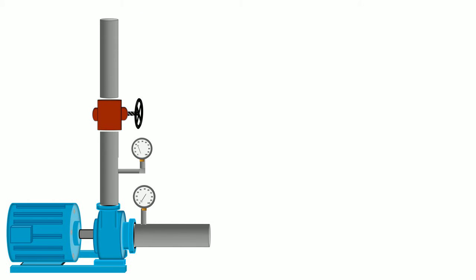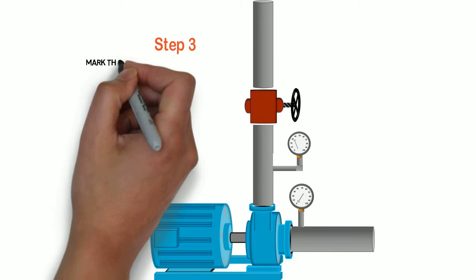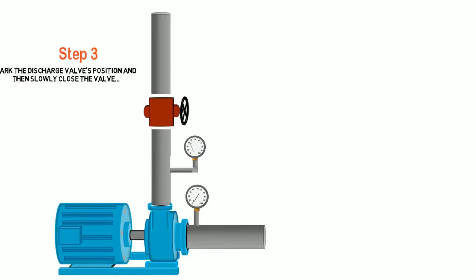Next step, we're actually going to go to the mechanical room. We're going to go to our pump and we are going to shut the discharge valve slowly while the pump is running. First, we're going to mark the position it was in before we closed it, because we want to return it to that position when we're done.